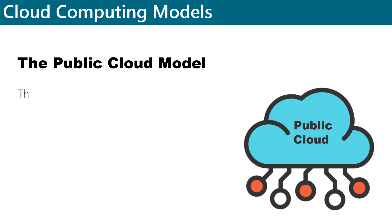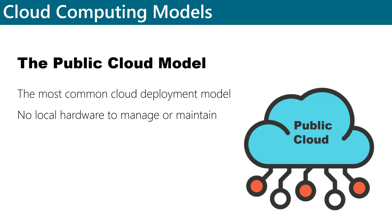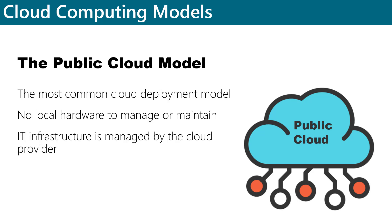The public cloud model is the most common cloud deployment model available. In the public cloud model, the organization has no local hardware to manage or maintain. All resources and services run on the hardware that is supported by the cloud provider. The IT infrastructure, including hardware, servers, and software, resides somewhere other than the on-prem data center, and it's all managed by the cloud provider.